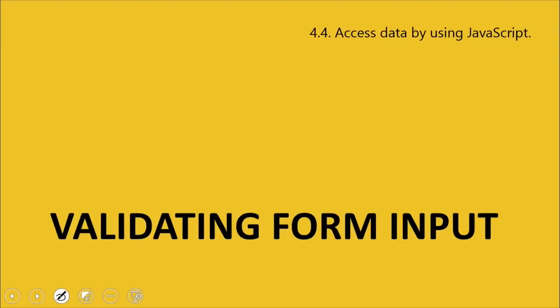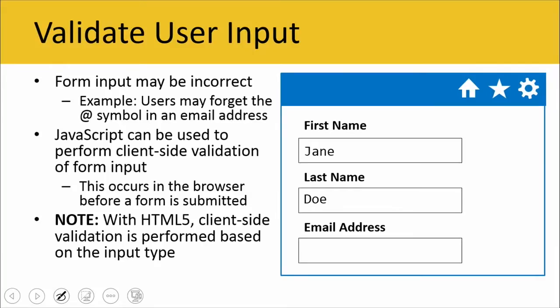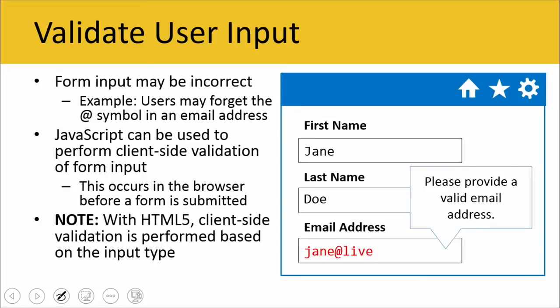Lastly, we already talked about validating form input. A lot of this can already be done on the client side with CSS and HTML, but JavaScript can also be used to validate user input. Sometimes you might forget the at symbol in an email address or forget to write .com. JavaScript is used to perform client-side validation in addition to CSS3, or you can use it in lieu of. For example, if we type "Jane at Live" and forget the .com, JavaScript can prompt us to provide a valid email address.